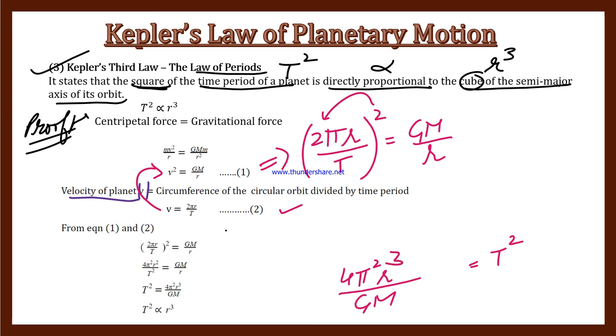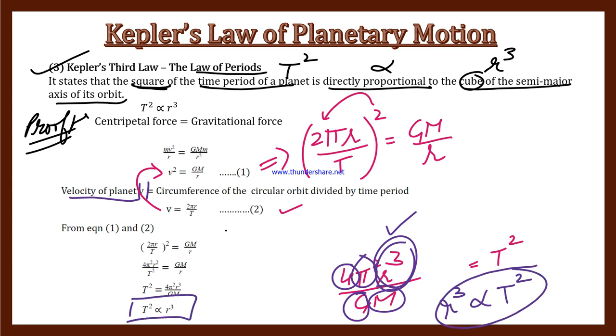When R is multiplied with R, we get R cube. So R cube is on one side. Now, 4π² is constant, G is constant, capital M (Earth's mass or sun's mass) is also constant. Only R is variable. So we can write R cube is directly proportional to T squared.